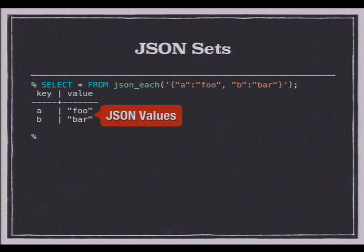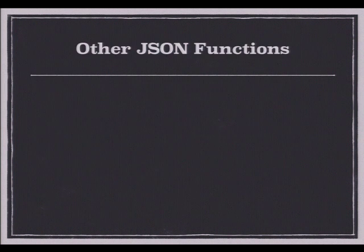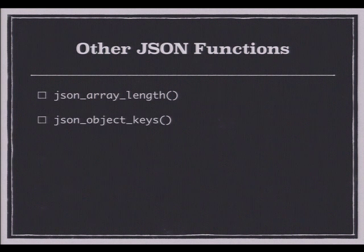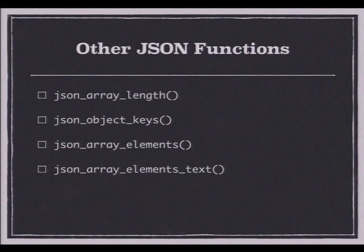Similar to the HStore each function, we have json_each which returns key-value pairs. The value will be a JSON string — that's why you see double quotes. You can also use json_each_text to get values back as text instead. You can get the length of a JSON array — if you pass an object it gives an error. You can get a list of keys in the JSON — if you pass an array you'll get an error. There are functions to return elements of an array as JSON values or as text.